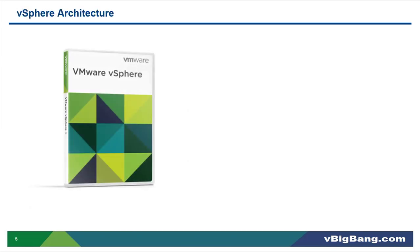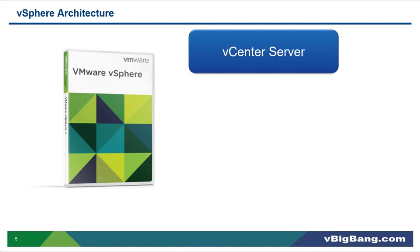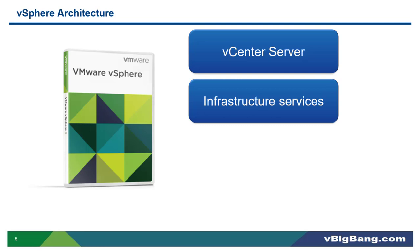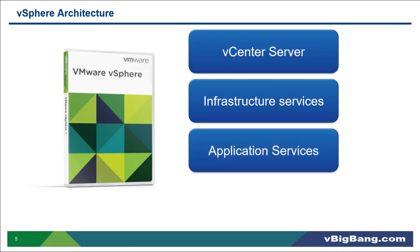vSphere architecture has four major components. The first one is vCenter Server. vCenter Server provides a single point of control for your vSphere data center and provides essential data center services such as access control, performance monitoring and configuration. The second component is infrastructure services. It abstracts, aggregates and allocates all your resources and categorizes them into compute, storage and network resources.